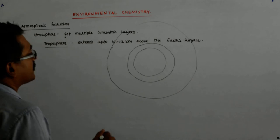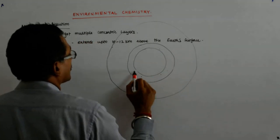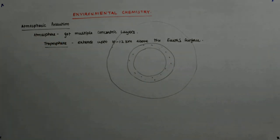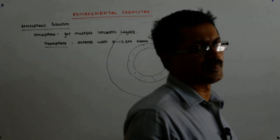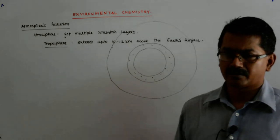So troposphere is basically one of the closest and the most humdrum layer of the atmosphere, followed by stratosphere, followed by ionosphere and then exosphere and then gone. Then there is no air at all.